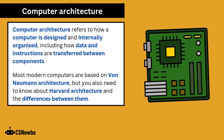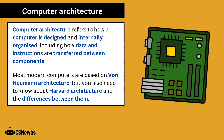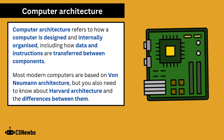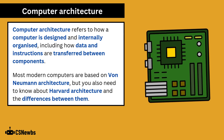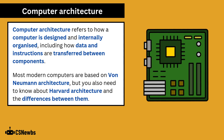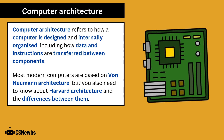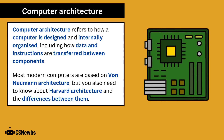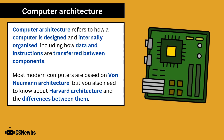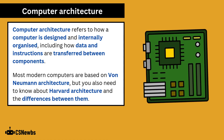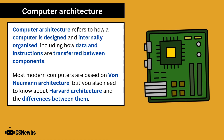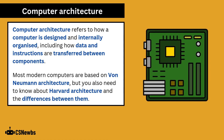Computer architecture refers to how a computer is designed and internally organized, including how data and instructions are transferred between components. Most modern computers are based on von Neumann architecture, but you also need to know about Harvard architecture and the differences between them.